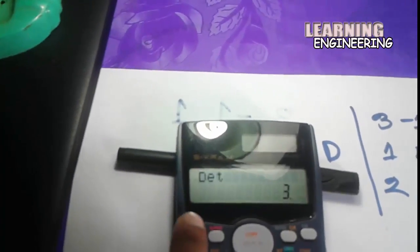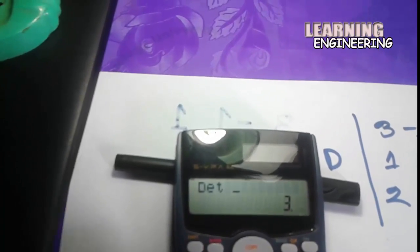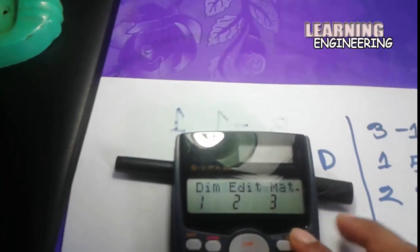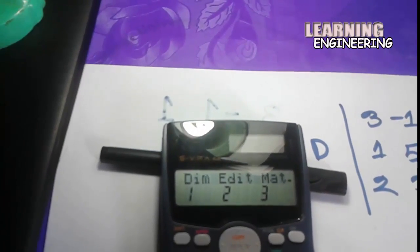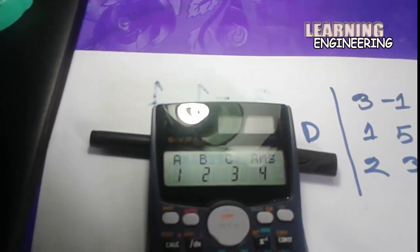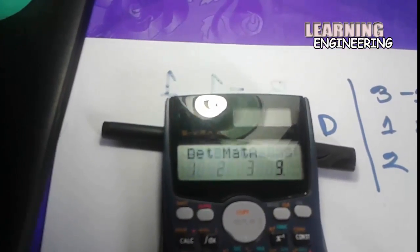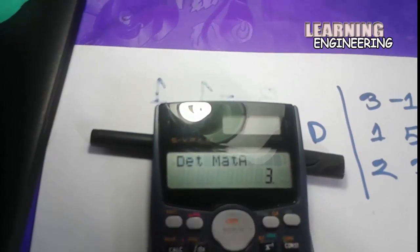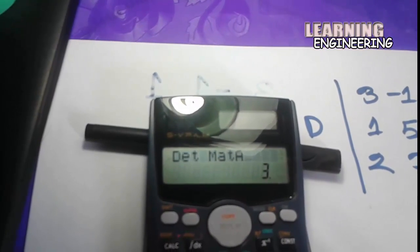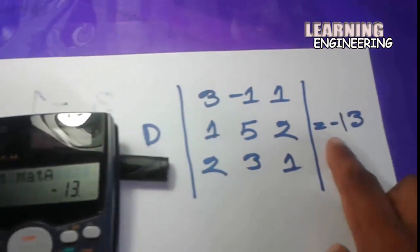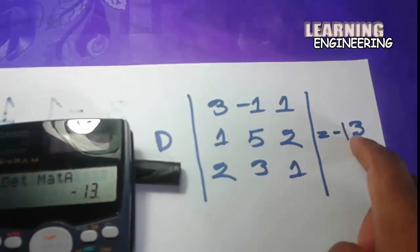Again I press Shift and 4. Here, press 3. I put the three-matrix and memory location — I got it 1, so I press 1. Here is matrix A. Then press equal. This matrix answer is minus 13. Here is this matrix result: minus 13.